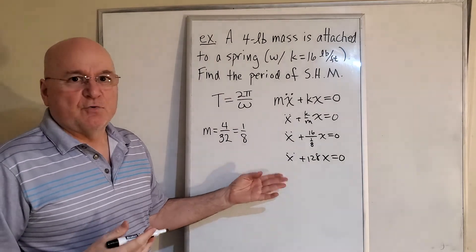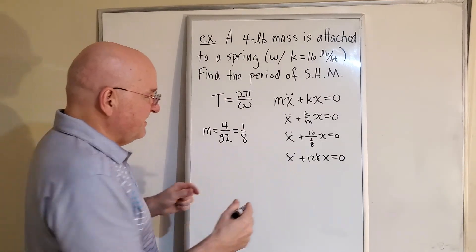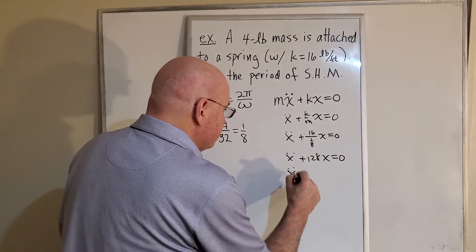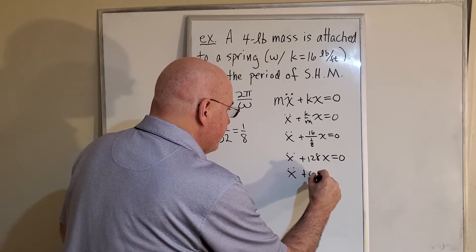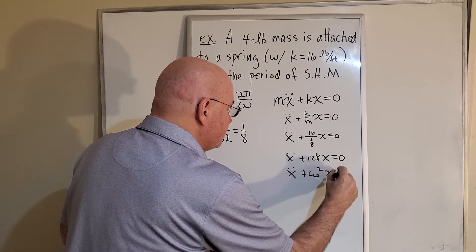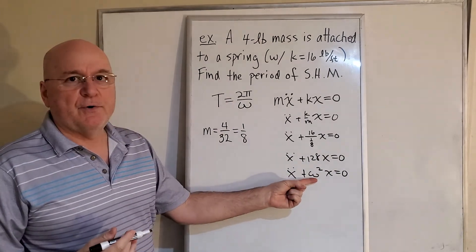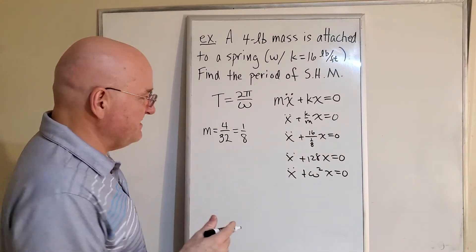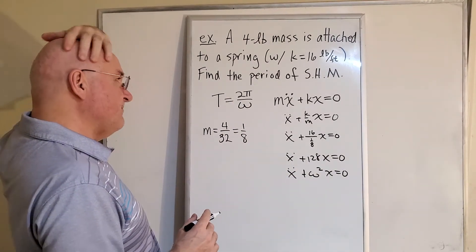Now that we've written this, we know what this is: this is x'' + ω²x = 0. So we've figured out what omega squared is. It'll be easy to figure out what omega is, and then we can plug it in here and we'll be done.